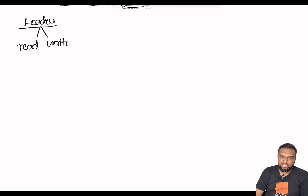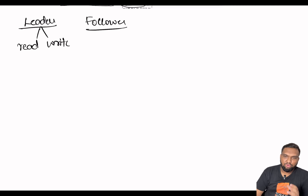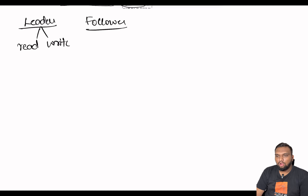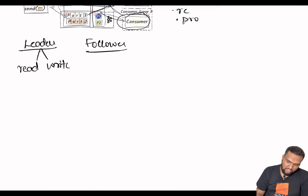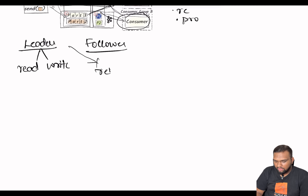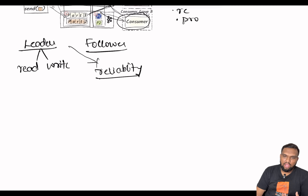Followers are the brokers to which partitions are copied from the leader, in order to increase resilience. We have multiple partitions and they are copied into followers to maintain the reliability of the entire system. So leaders and followers together provide reliability in the Kafka ecosystem.